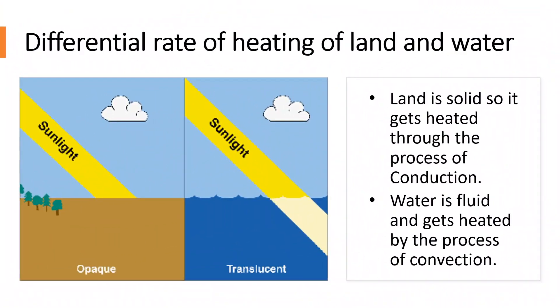Now let us know that how land and water have a differential rate of heating due to the characteristics which they possess. Now land is a solid substance and gets heated through the process of conduction. Water body is a fluid substance and gets heated by the process of convection.